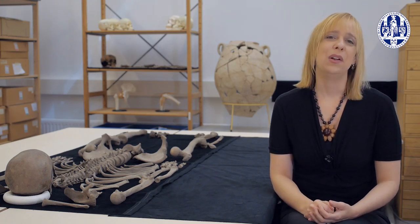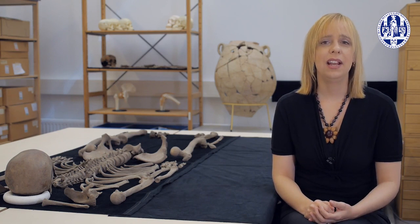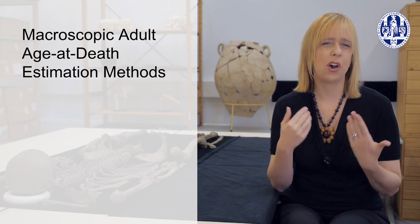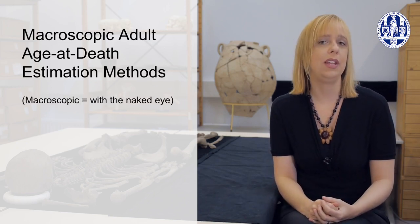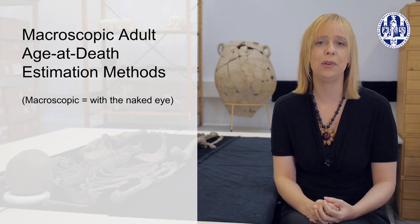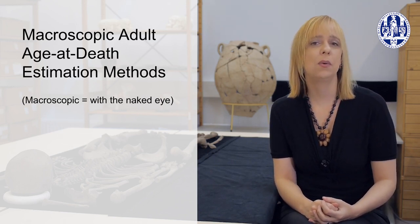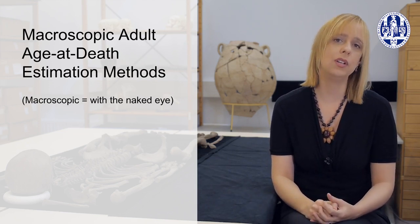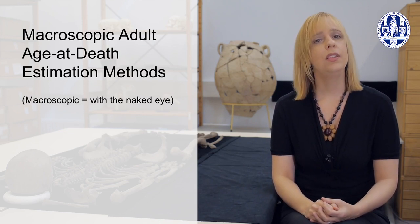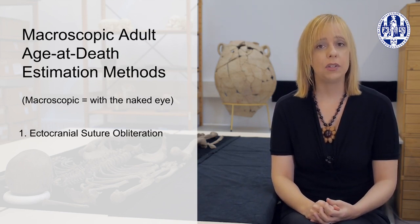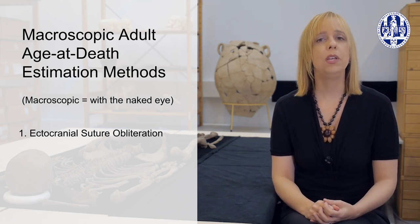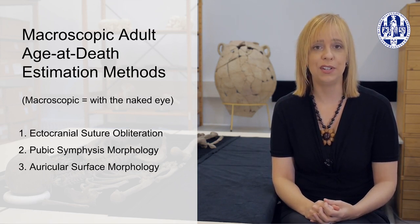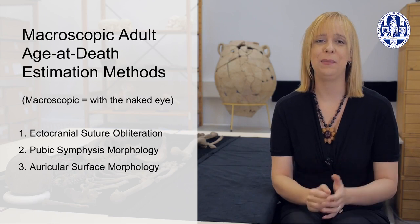In the rest of this video, we'll go over three common methods used to estimate adult age at death. Note these are macroscopic methods, meaning they're things you can assess with the naked eye. We will not be reviewing microscopic methods, which require a microscope and are based on the proportion of different types of bone cells that increase or decrease with age. The three macroscopic methods are ectocranial suture obliteration, pubic symphysis morphology, and auricular surface morphology.